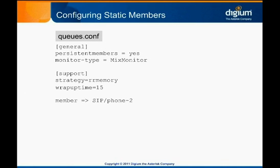Static members are defined one per line, just like any other queue option. A member is only added to the queue under which the assignment is made. To have the same member in multiple queues, they must be individually listed in the section defining each queue.